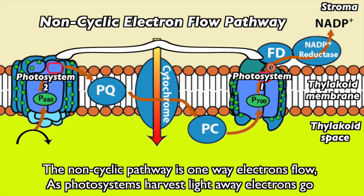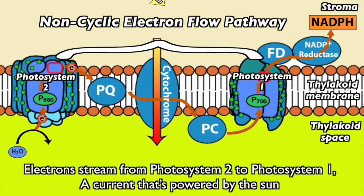As photosystems harvest light, away electrons go. Electrons stream from photosystem 2 to photosystem 1, a current that's powered by the sun.